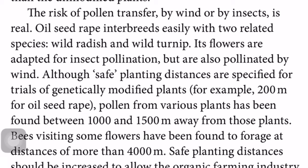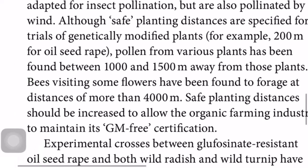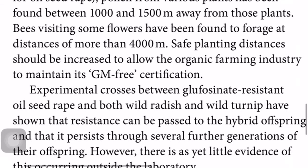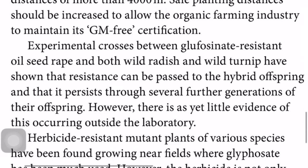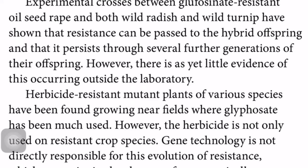The risk of pollen transfer by wind or insect is real. Oil seed rape interbreeds easily with two relative species: wild radish and wild turnip. Its flowers are adapted for insect pollination but are also pollinated by wind. Although safe planting distances are specified for trials of genetically modified plants, pollen has been found between 1,000 and 1,500 metres away. Bees have been found to forage more than 4,000 metres. Safe planting distances should be increased to allow organic farming to maintain its genetically-modified-free certification.